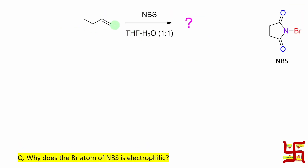Now, looking at the double bond: there is one sigma bond and one pi bond. Remember, the pi bond is more reactive because it is produced by sideways or parallel overlap of P orbitals. So it is weaker, and that's why it is more reactive.